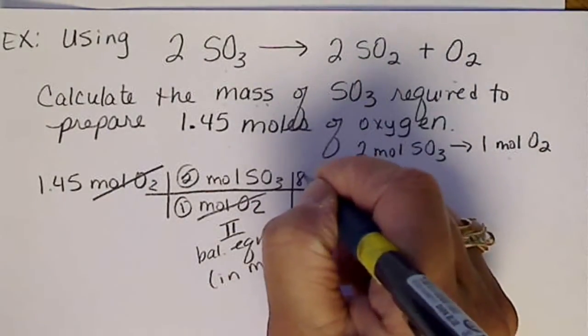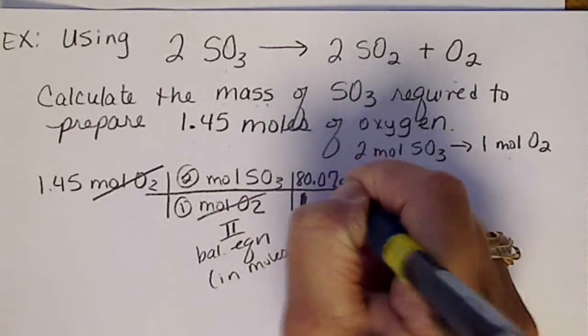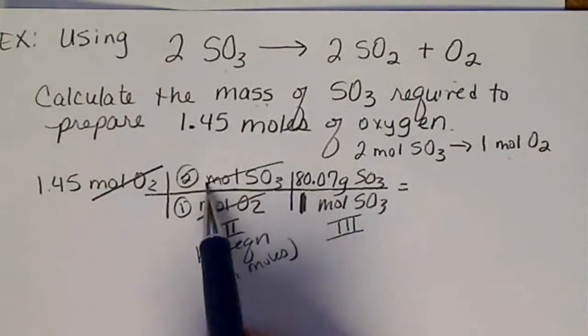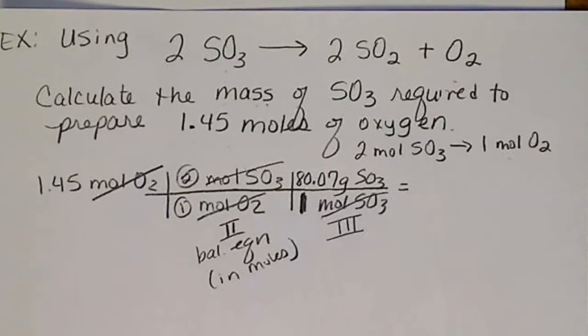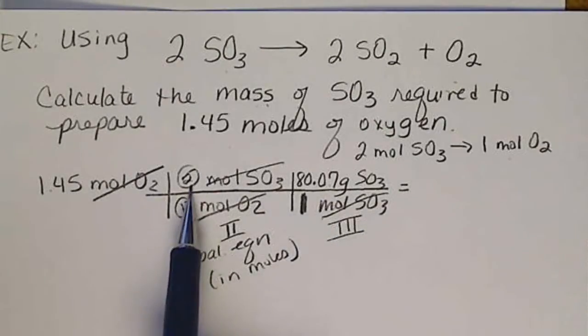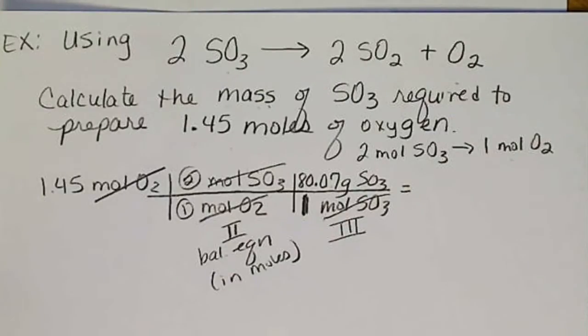So the number that we get off the calculator always goes with the grams. And we can double check and make sure that those units cancel. So that number is already in the calculator. So that times 2 times 1.45.